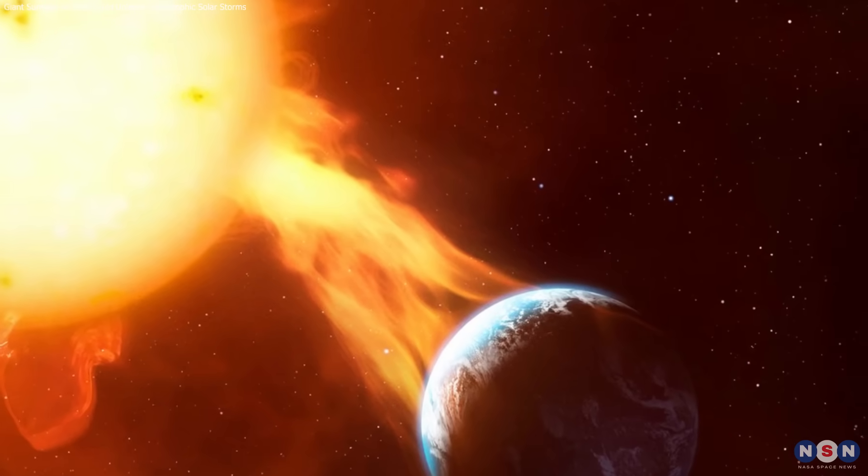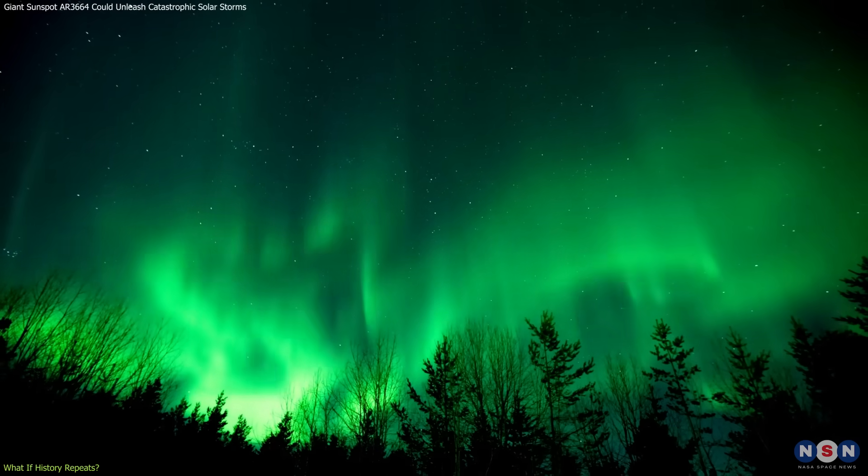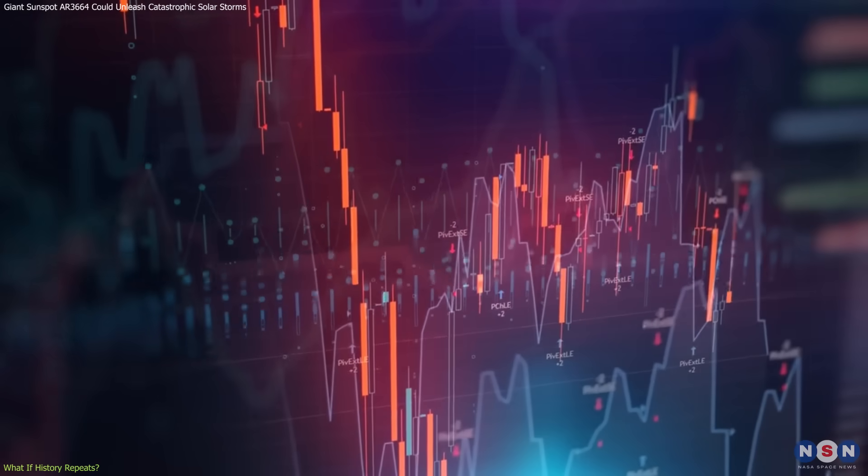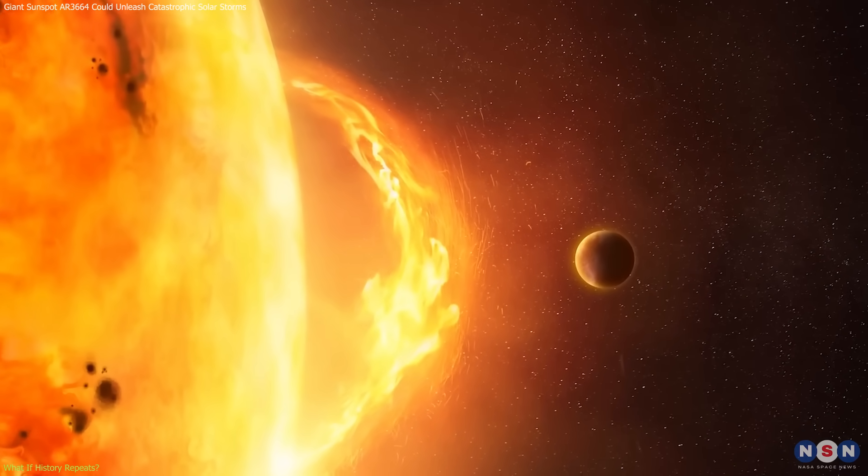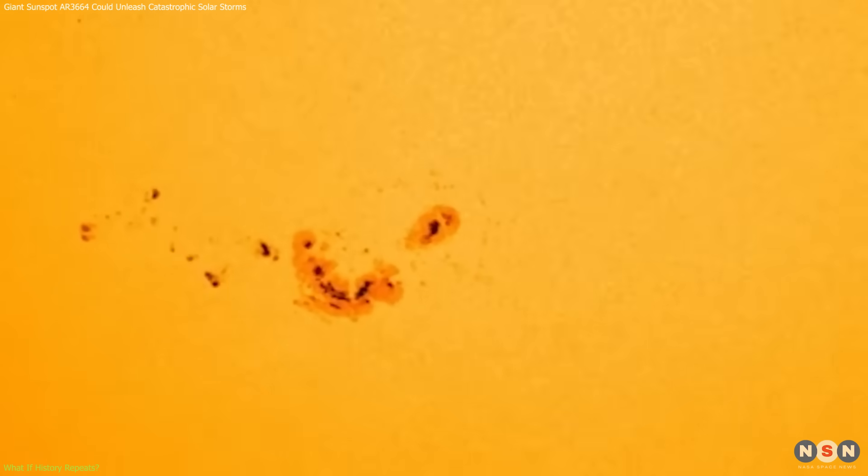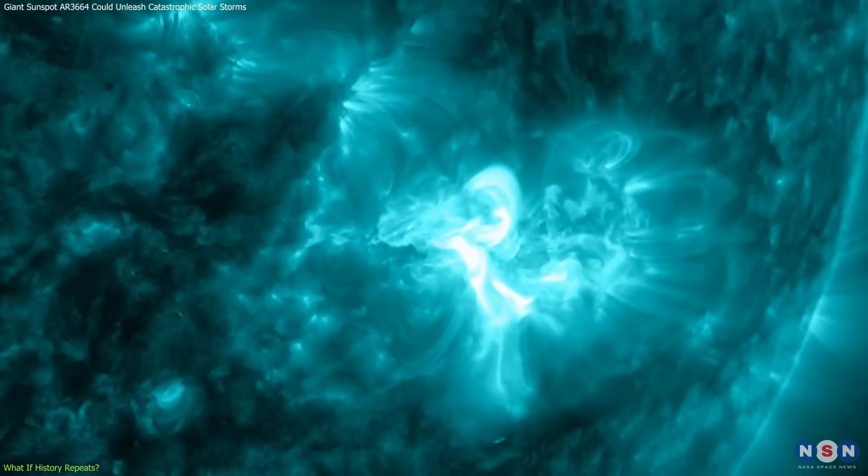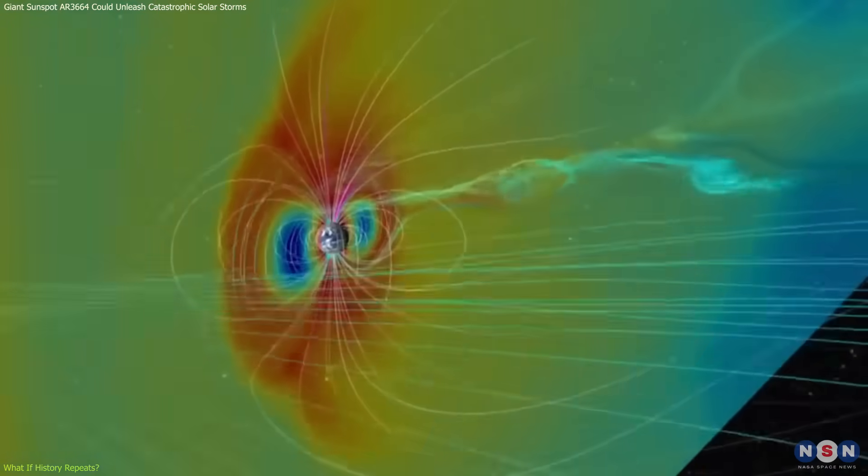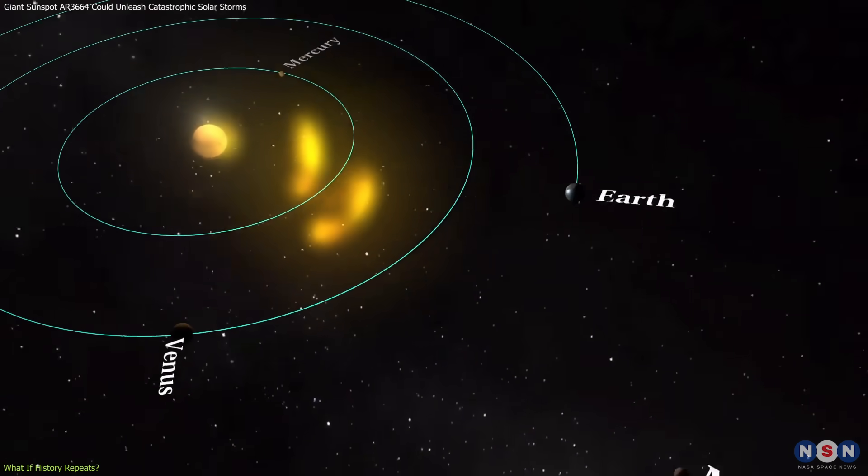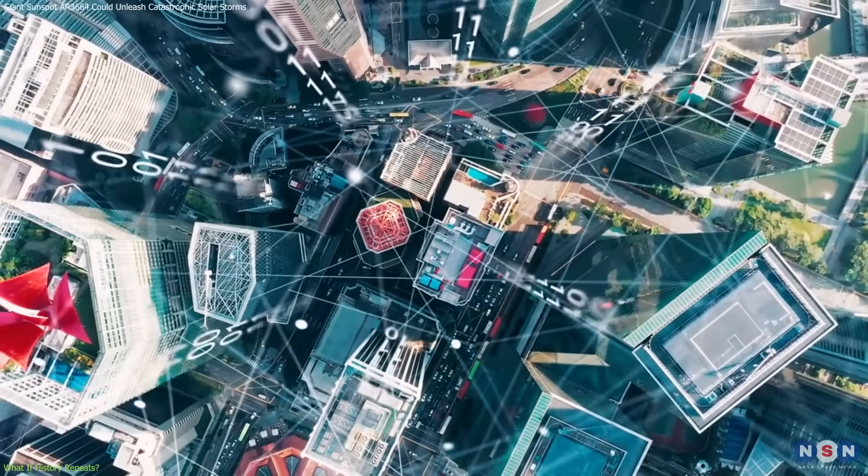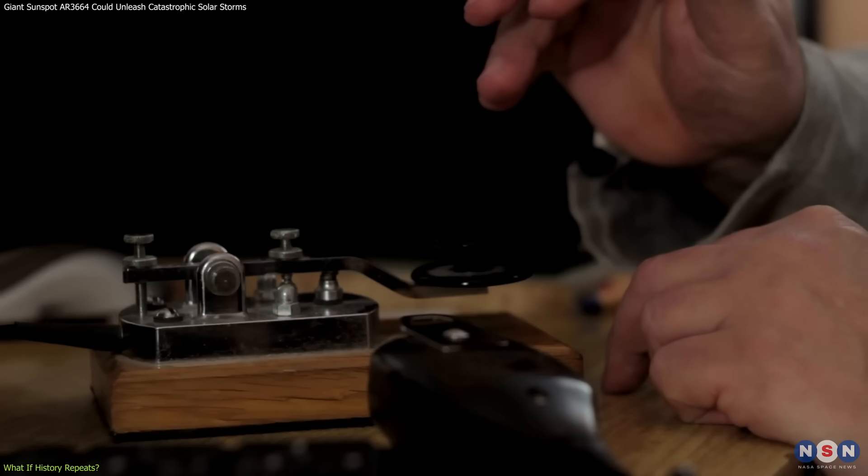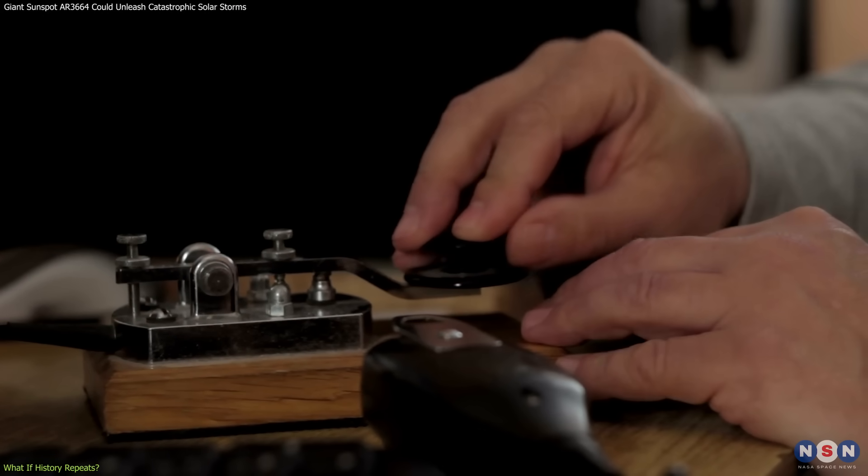Imagine a modern-day Carrington event. The consequences would reach far beyond beautiful auroral displays, potentially crippling the global economy and disrupting daily life. This scenario isn't just a theoretical worry. It's a real possibility, as sunspot AR3664 continues to exhibit behavior reminiscent of the 1859 event. The scale and intensity of a Carrington-like event today would likely exceed anything we've experienced in the past, due to our increased dependence on technology. During the original Carrington event, the world was only beginning to harness electricity. Telegraph systems were the most complex electrical technology in widespread use.